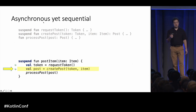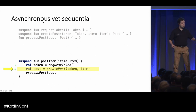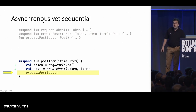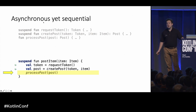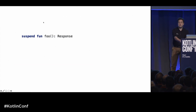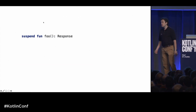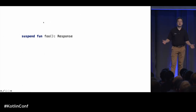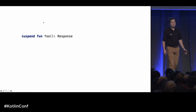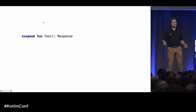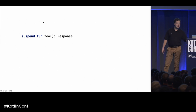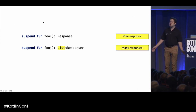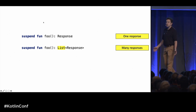It's sequential. With coroutines, we have suspending functions, and we can use them to say that our function returns a response. We will wait for the server and over time we'll get a response. Or instead of one response, we can have many responses — we can return a list of things.